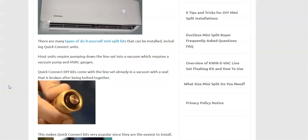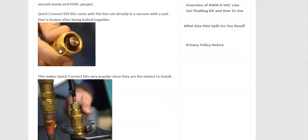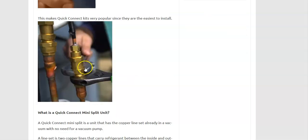The second option is to use what's called a quick connect mini split kit, and this is a very good option. Basically, these quick connect systems come sealed already. There's a seal at the end where you connect it, and that seal is only broken once it's bolted together, which is a very good system. It's widely used. When done correctly, it's just as good as vacuuming down the system since it's already in a vacuum.